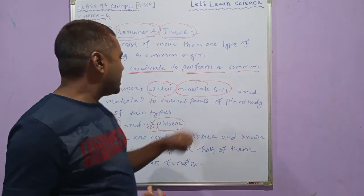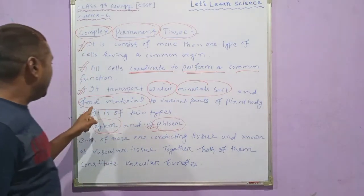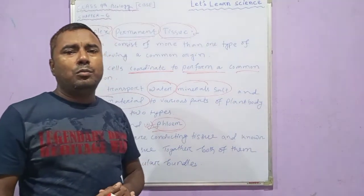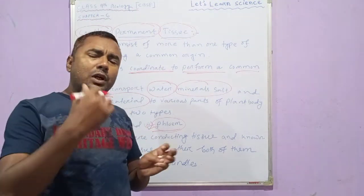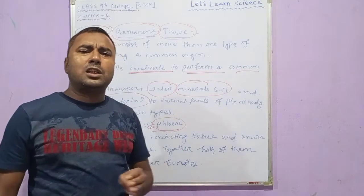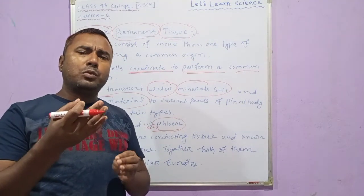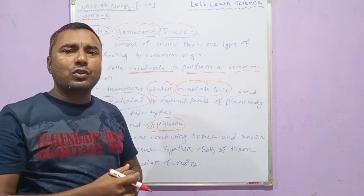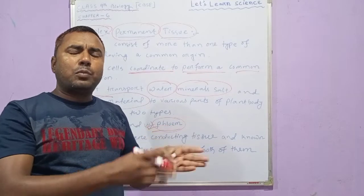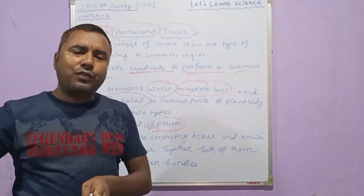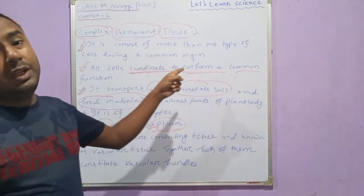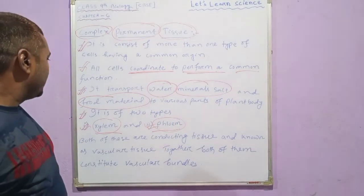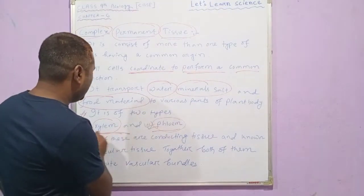Complex permanent tissue transports water, mineral salts, and food material to different parts of the plant body. One type carries water and mineral salts from the soil through the roots up to the leaves so that photosynthesis can be carried out. The food prepared during photosynthesis is then transported to different parts of the body. So complex permanent tissue is mainly responsible for the transportation of water, mineral salts, and food material, and it is of two types.